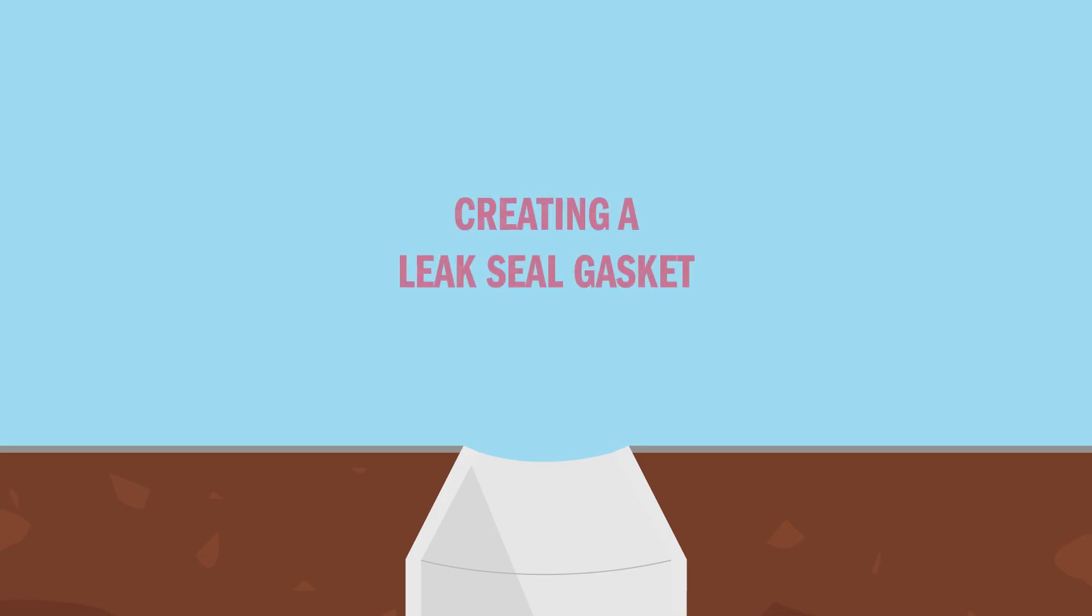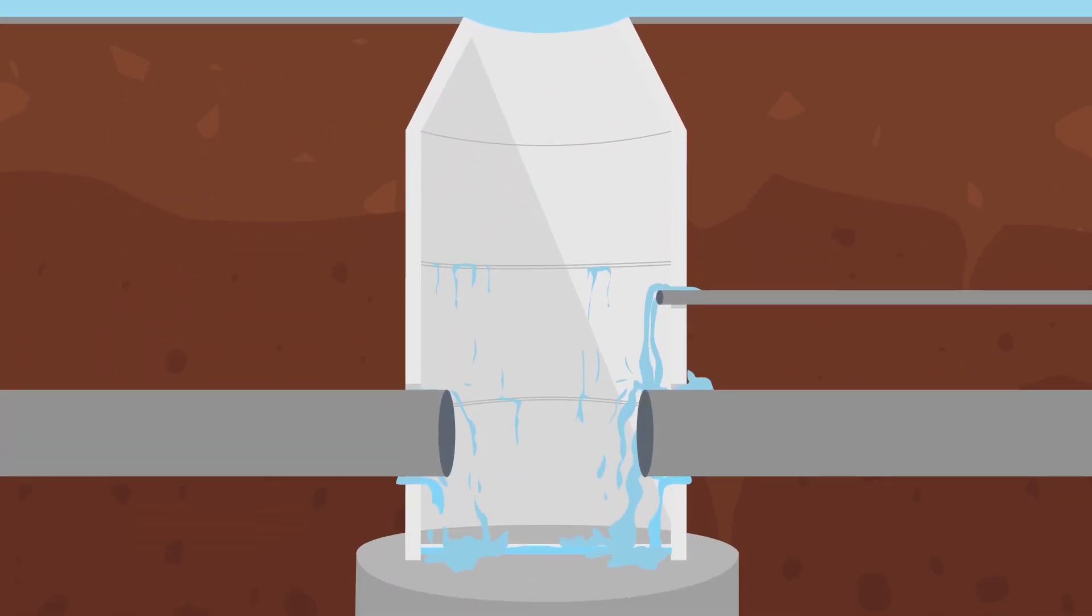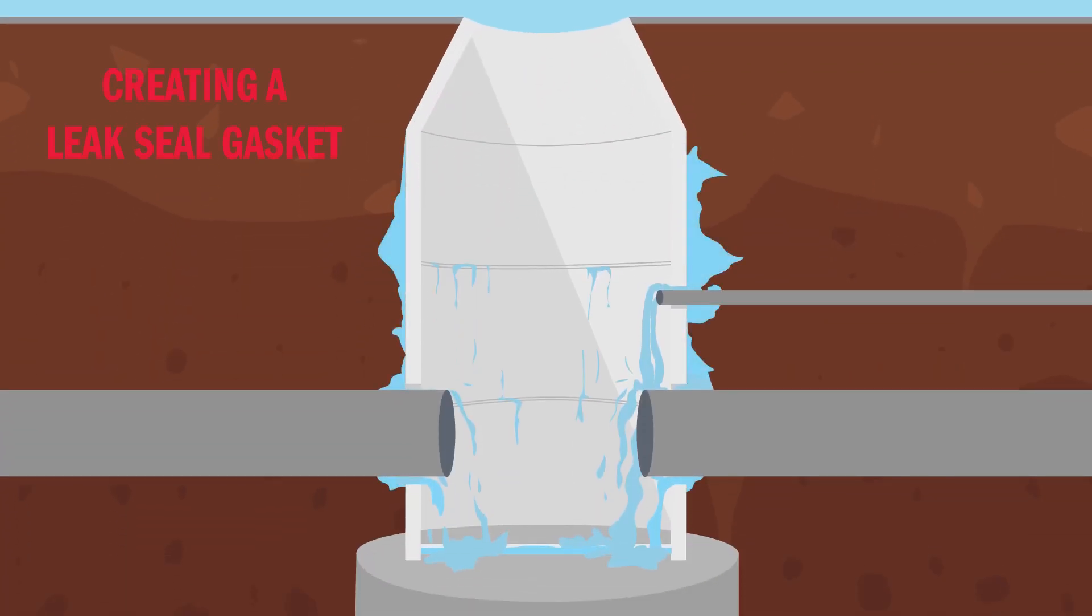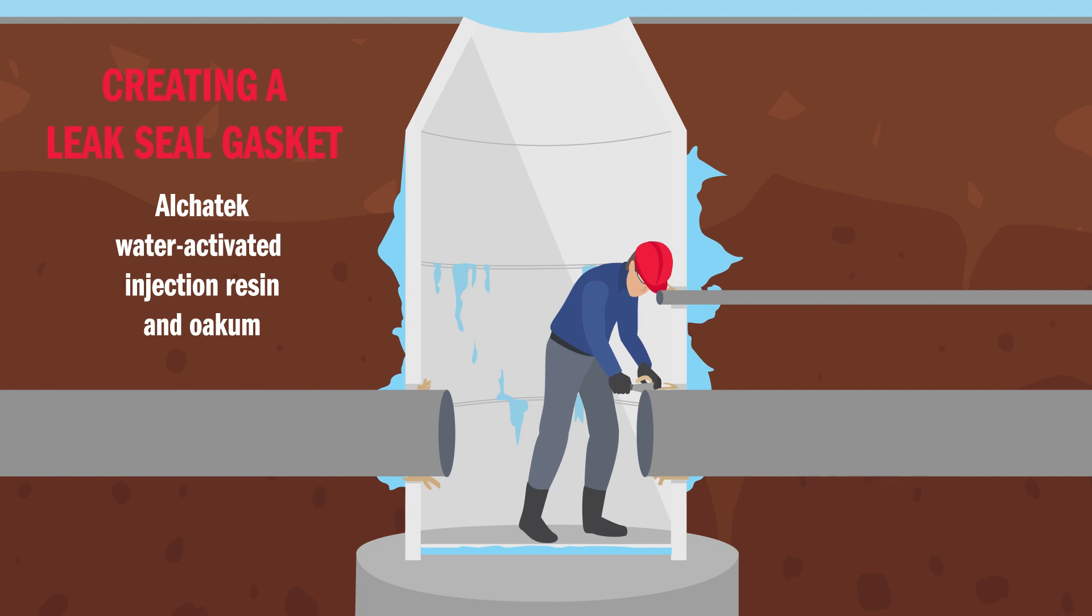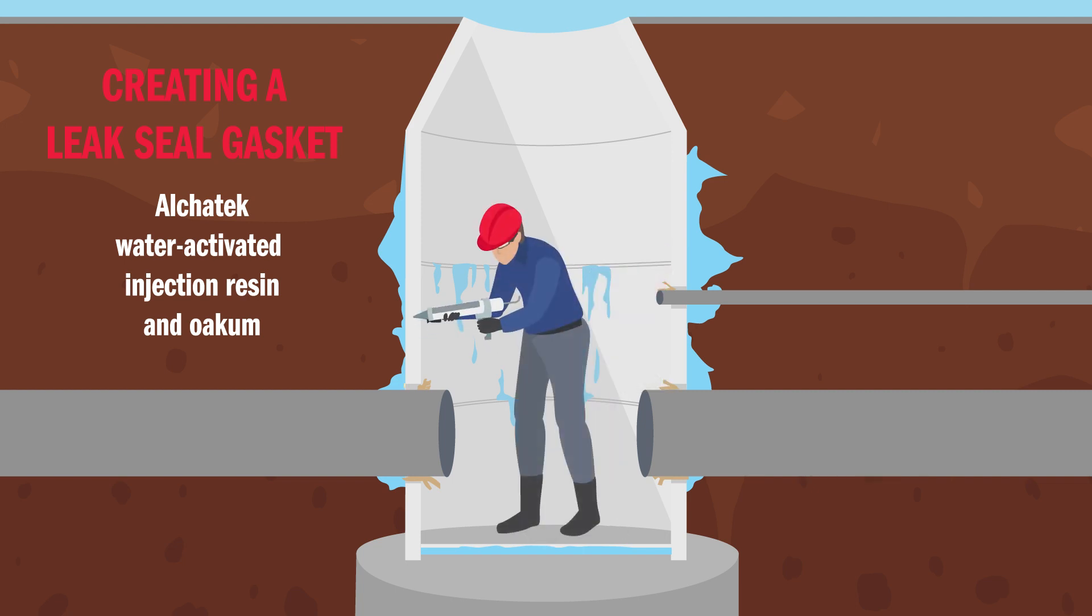Another method for stopping leaks is to create a leak seal gasket. Wide cracks, joints and other defects allow water to infiltrate into below-grade structures. Qualified contractors can use the Alchatek leak seal line of resins and oakum to repair pipe penetrations and other wide cracks, joints and defects.